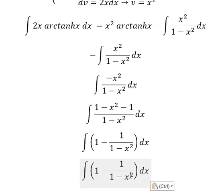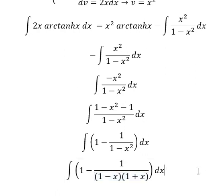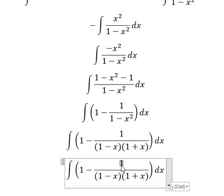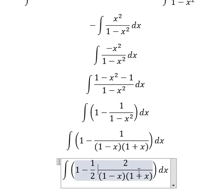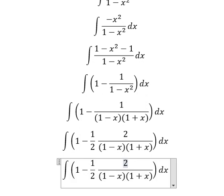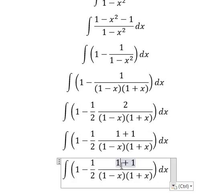Next, this denominator we can factor as 1 minus x times 1 plus x. We can put 2 in the numerator and denominator, so 2 equals 1 plus 1. We need to split this: negative x and positive x.